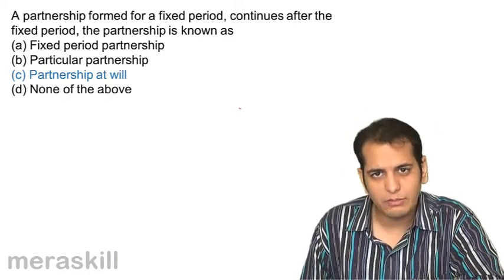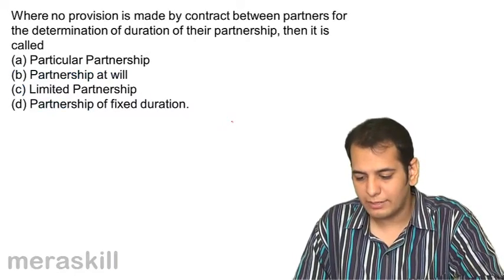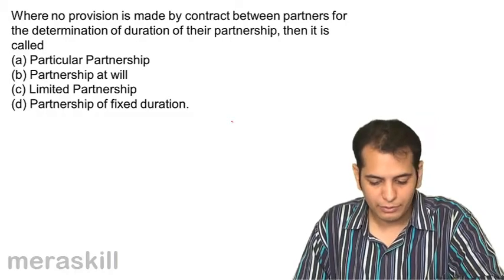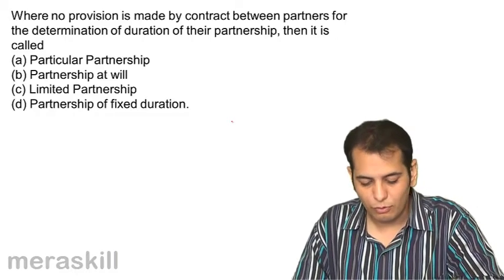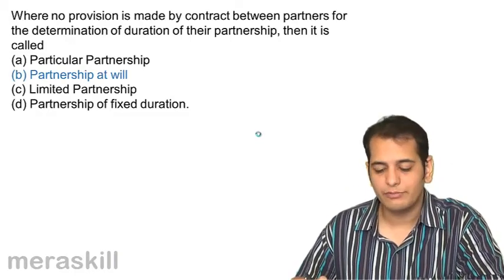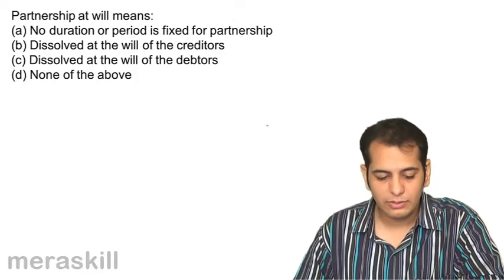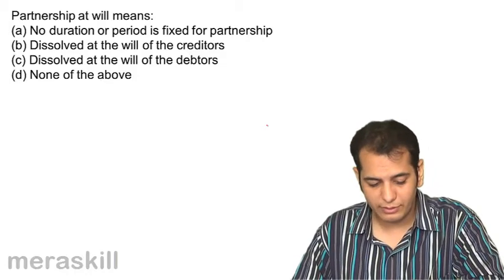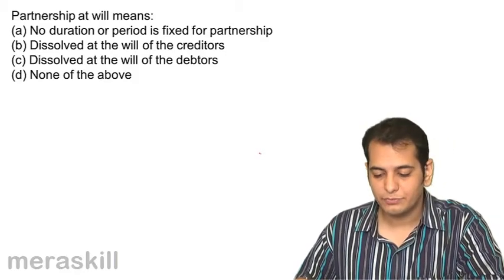Next: Where no provision is made by contract between partners for the determination of duration of their partnership, it is called — a) particular partnership, b) partnership at will, c) limited partnership, d) partnership of fixed duration. It is again partnership at will. Partnership at will means no duration or period is fixed for the partnership.